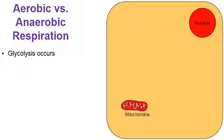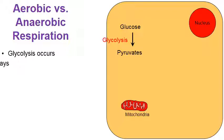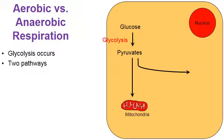In my cell, here's a molecule of glucose. Through the process of glycolysis, the glucose will be broken down into a couple molecules of pyruvates. What happens next depends — there are two pathways. One pathway leads directly into the mitochondria, and one pathway has the pyruvates stay in the cytoplasm.